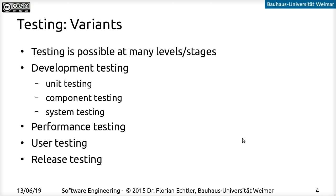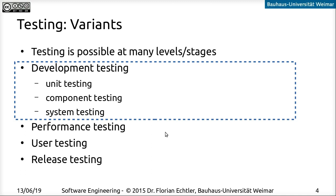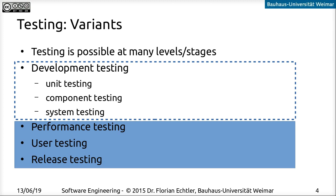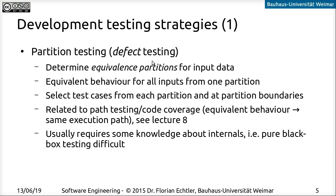We already had a look at the individual aspects of development testing. Let's go back to development testing and look in a bit more detail at how we can design our test cases. If we want to focus on defect testing, a common strategy is so-called partition testing. That means we first figure out which subsets of the input data are expected to cause the same behavior. All inputs from one partition will cause the software to behave in the same way. Then we pick test cases from each of these partitions, and especially at the boundaries between those partitions.